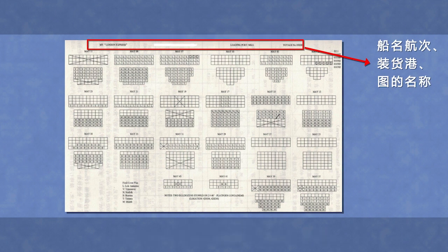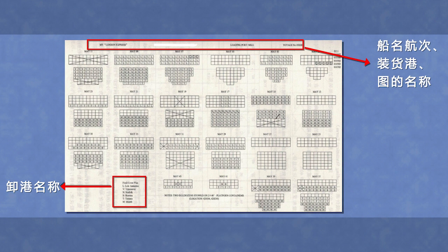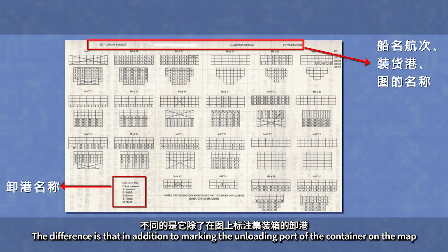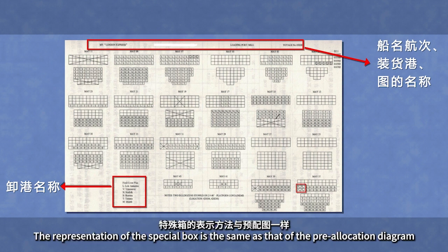第一行先介绍船名、航次、装货港和本图的名称。图的左下角方格中各字母表示卸港名称。不同的是，它除了在图上标注集装箱的卸港，还标注了特殊箱代号。特殊箱的表示方法与预配图一样。